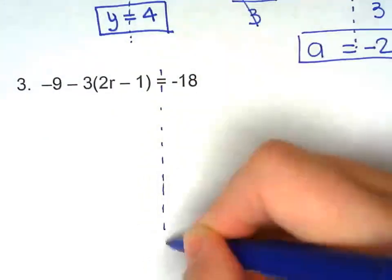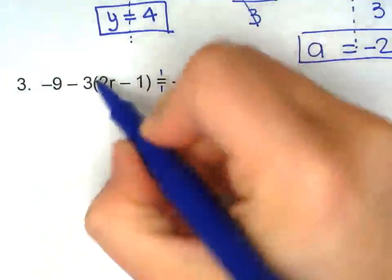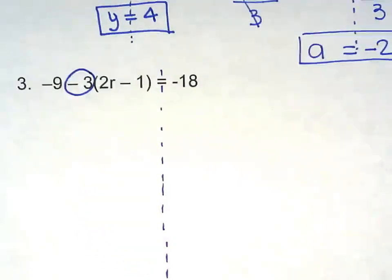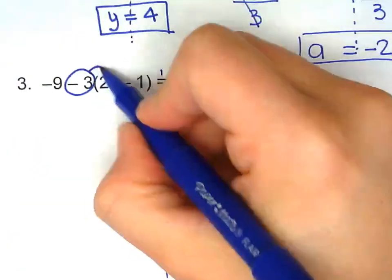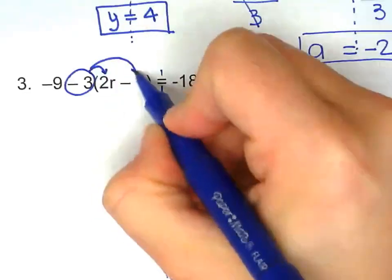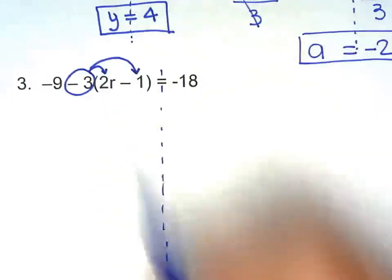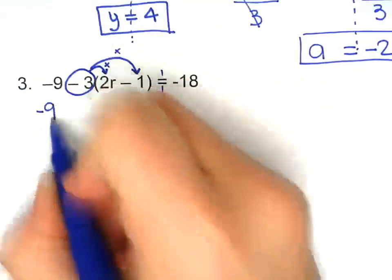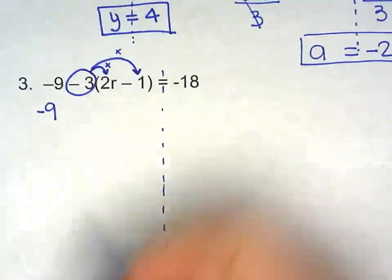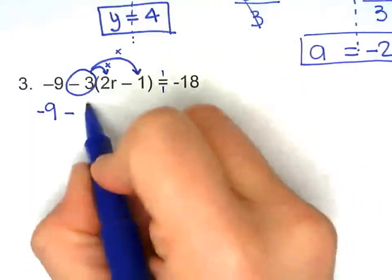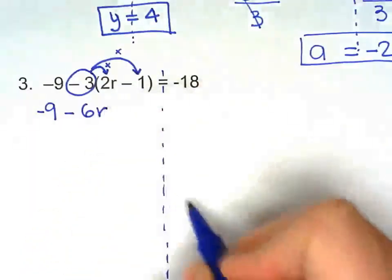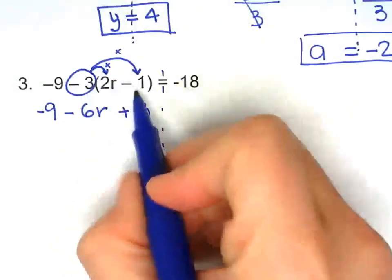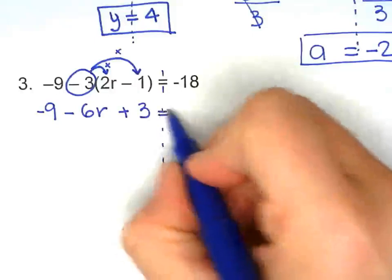Separate both sides. Now be careful here. We're distributing a negative number. So when we distribute the negative 3, that means we're multiplying those two terms by negative 3. Negative 9, we're not doing anything with it. So you just bring that down. So multiply by negative 3. That is negative 6r. That is plus 3. Negative 3 times negative 1 is positive 3.